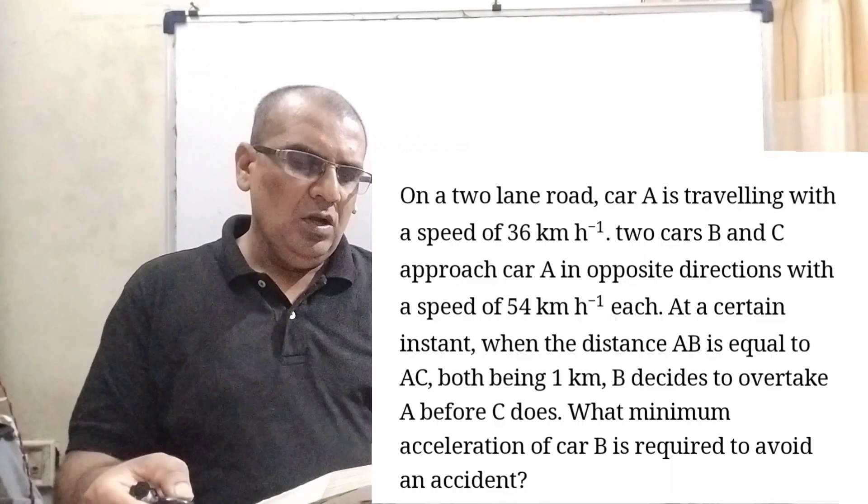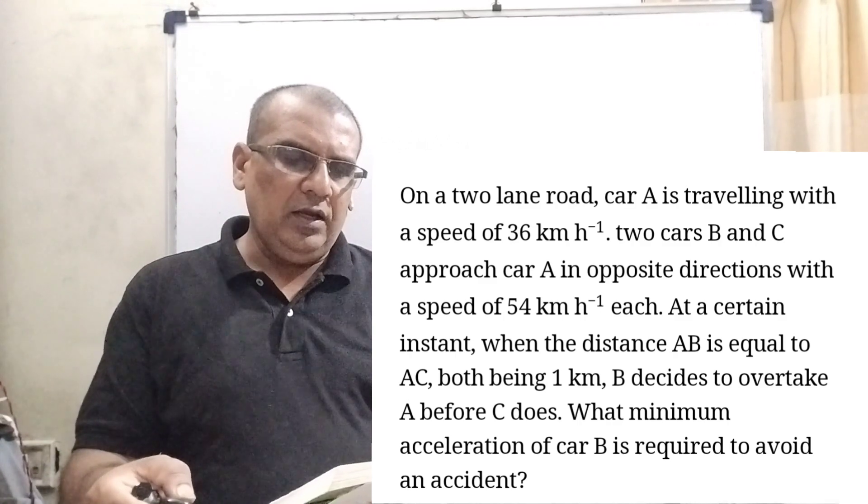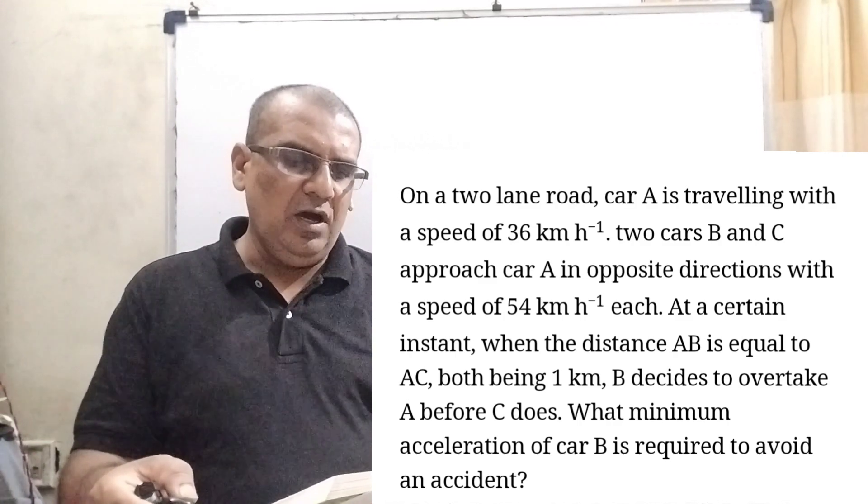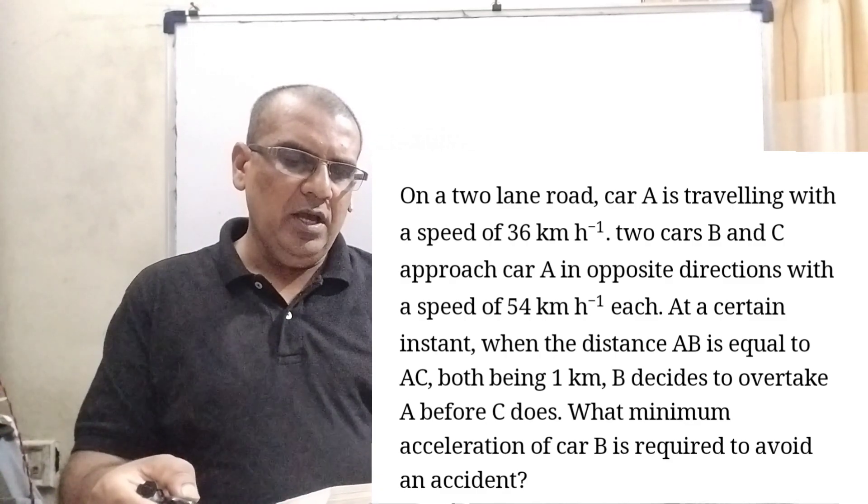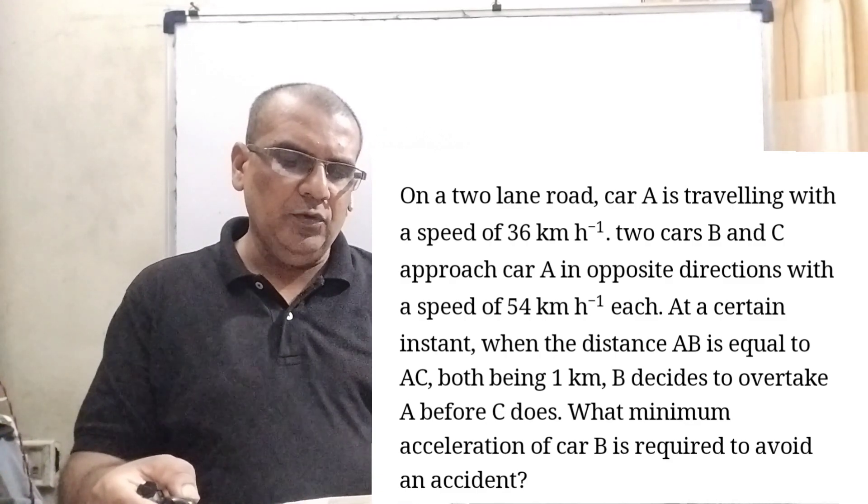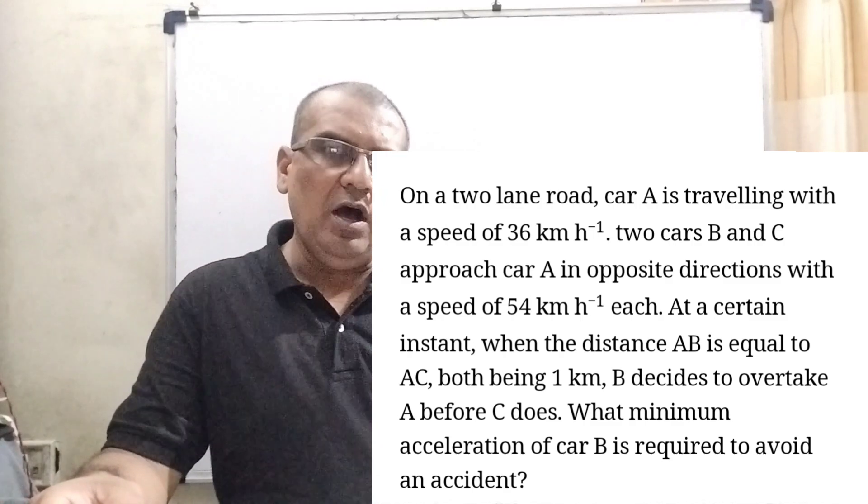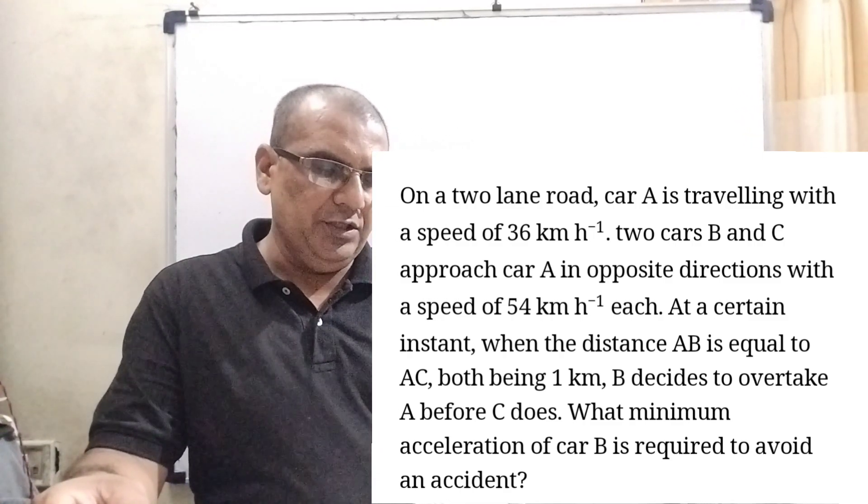Now, here is the question. On a two-lane road, car A is traveling with a speed of 36 km per hour. Two cars, B and C, approach car A in opposite directions with a speed of 54 km per hour each.